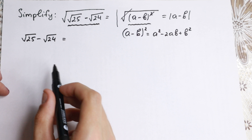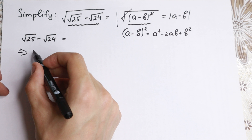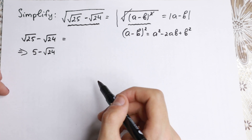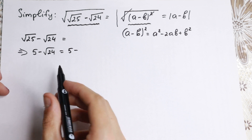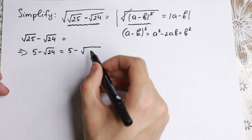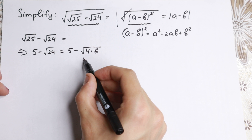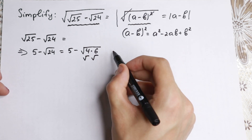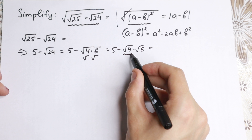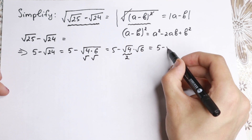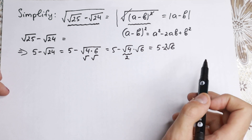Let's look closely at this expression: square root of 25 minus square root of 24. We know that square root of 25 equals 5, so we have 5 minus square root of 24. We can write square root of 24 as square root of 4 times 6, and using the product rule for square roots, that becomes square root of 4 times square root of 6, which equals 2 times square root of 6. So we have 5 minus 2 square root of 6.